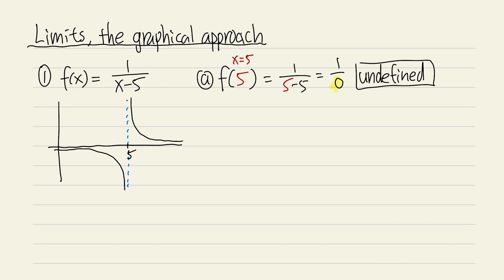Now let's look at limits. If we have the limit as x approaches 5 from the positive side — the little plus means we are coming from the right-hand side. Place your right index finger somewhere on the curve, and move it toward x = 5 along the curve.